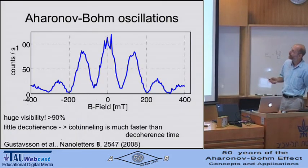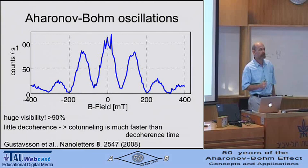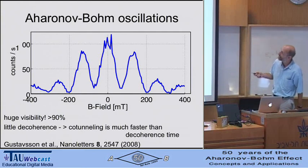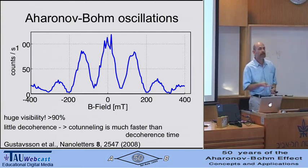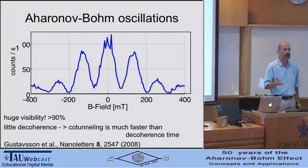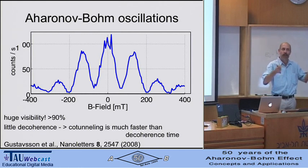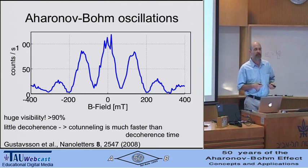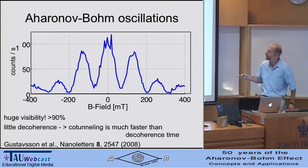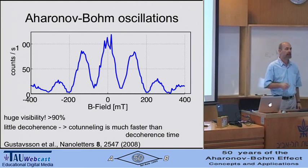If you just take the envelope of the trace, it looks like the Aharonov-Bohm pattern. Something quite amazing is that the visibility of this signal is almost 100%, which means that basically all of the electrons detected here are phase coherent. That's unusual in solid-state physics, because in a solid you have a Fermi sea of electrons—electrons talk to each other, there's dephasing, and typically at low temperatures if you have 10 or 20% amplitude you're doing pretty well. Here it's almost 100%.